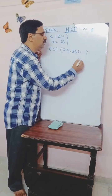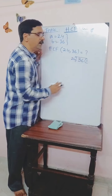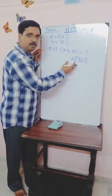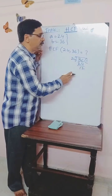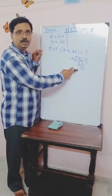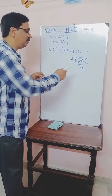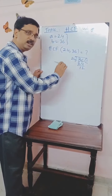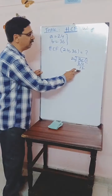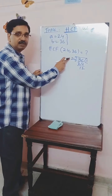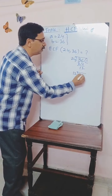Let us divide 36 by 24. Then 24 one time can be subtracted from 36. So 24 times 1 is 24, and the remainder is 12. The remainder is not 0 here — the remainder is 12, not 0. So we continue the division. With this remainder, we divide the divisor. So 24 is divided by 12.